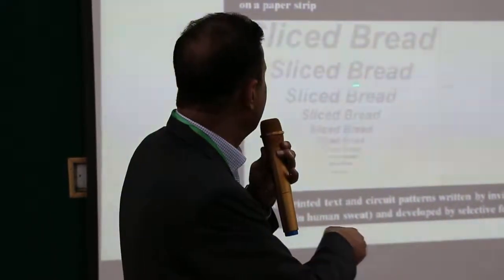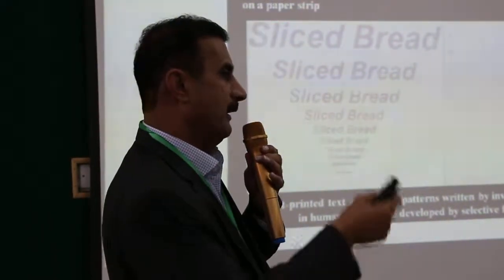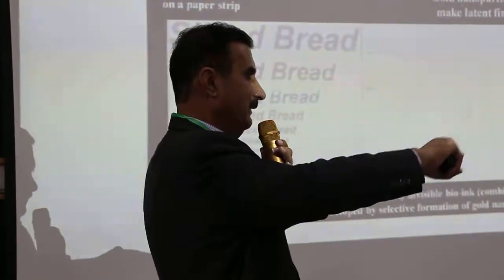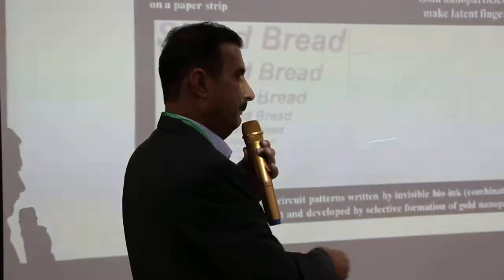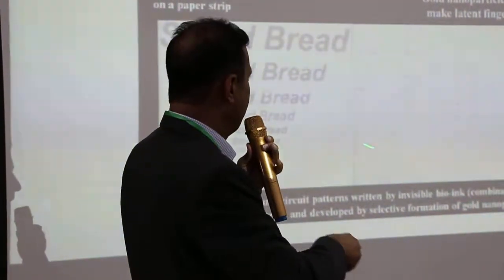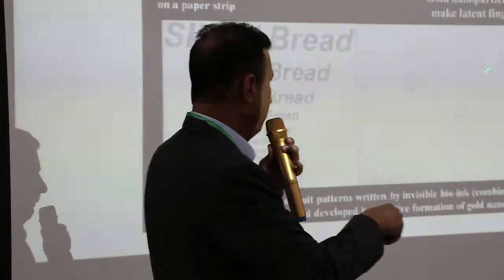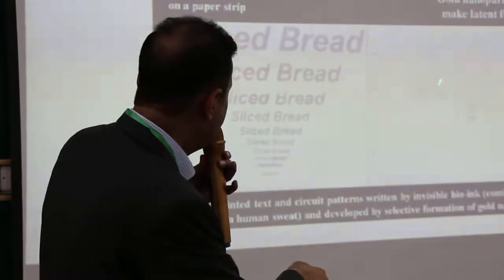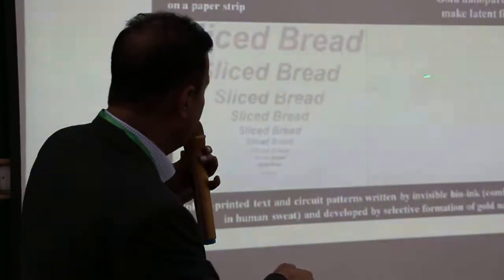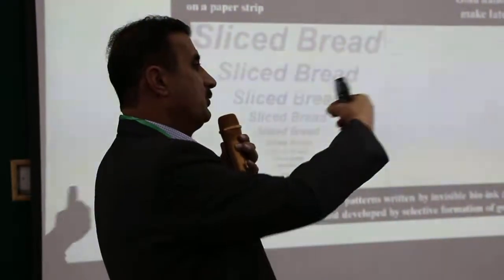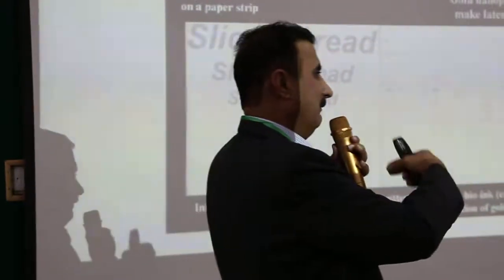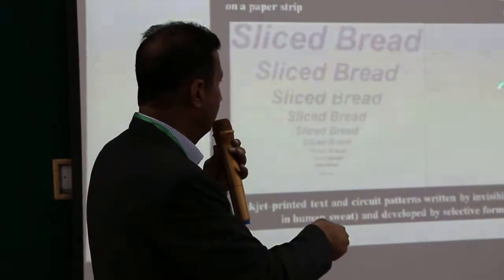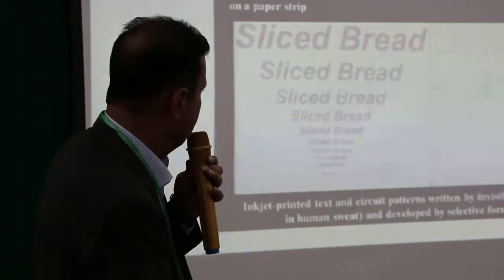Initially these patterns were not visible, but you can produce gold nanoparticles specifically on those printed areas, which were done by inkjet printing, and you can develop these types of structures. We were targeting flexible electronic materials, but unfortunately when observed under the electron microscope, there was still a huge gap between particles — they were not connected. We are still trying to make these conductive so they can be used for that purpose.